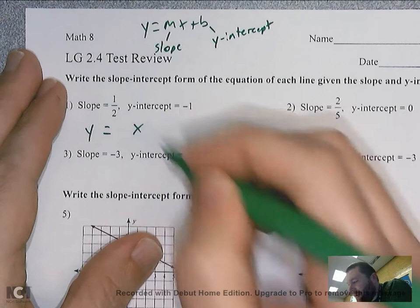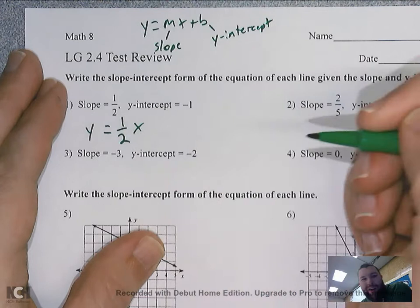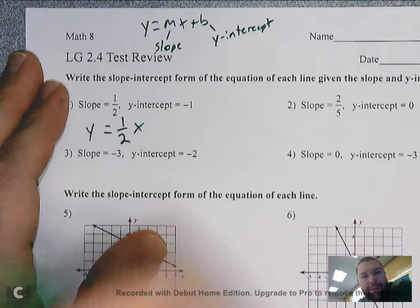The slope is one-half, and that is the number that multiplies with x, so it'd be one-half x. Remember your slope is usually a fraction — it can be a whole number if it's over one as a fraction.